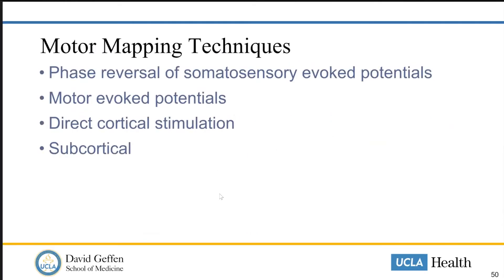As far as different types of function, different techniques can be applied for motor in particular. There are a variety of different things that we can do beyond direct cortical stimulation. There's phase reversal, motor evoked potentials, direct cortical stimulation, and subcortical mapping as well.